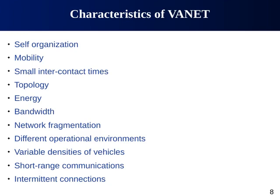Here are some characteristics and challenges of Vehicular Ad Hoc Networks. The first characteristic is self-organization, inherited from wireless networks of which vehicular networks are a subclass. Vehicles do not need support from any centralized authority, base station, or roadside infrastructure for self-organization — they are able to self-organize themselves.